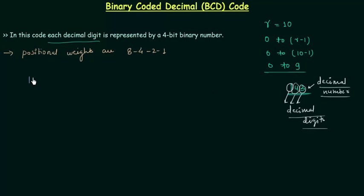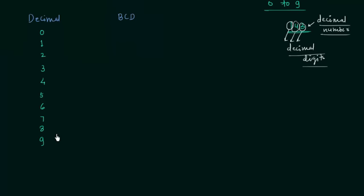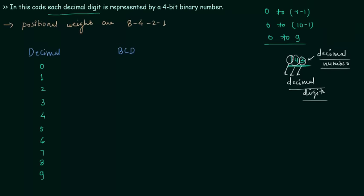Now we will write down BCD code for the decimal digits. In the first column we have decimal digits 0 through 9, and in the second column we will have the BCD code. The positional weights are 8, 4, 2, 1 — the weight of MSB is 8, then 4, then 2, and the weight of LSB is 1. We represent each decimal digit by a 4-bit binary number.